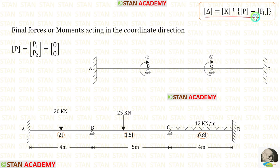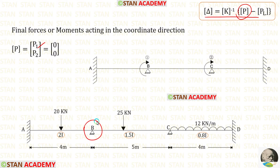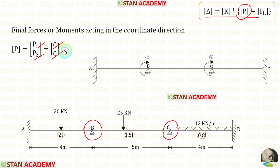Now let us find the P matrix. To find P1, we check point B — there is no applied moment at B, so we apply 0. To find P2, we check the second coordinate at point C — there is no applied moment there either, so we apply 0.